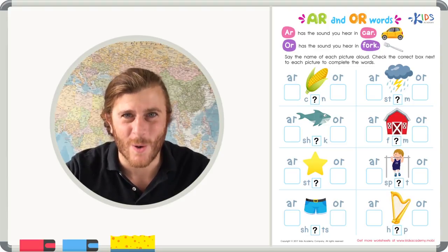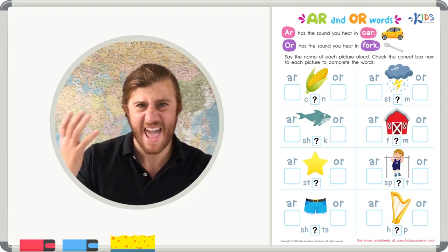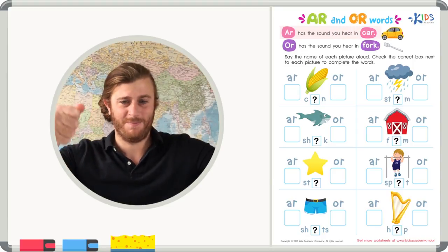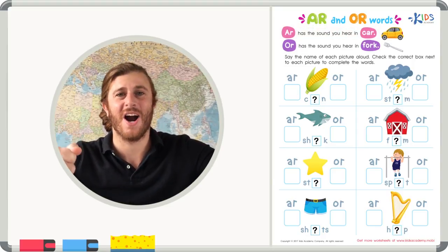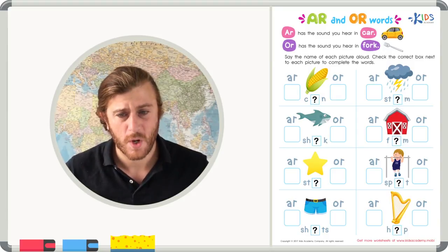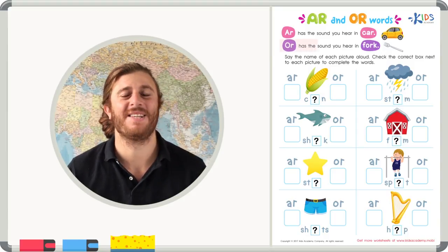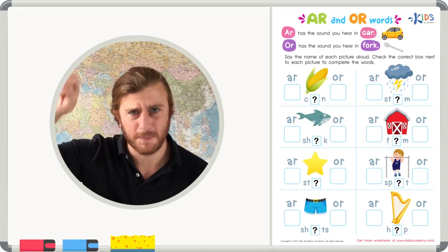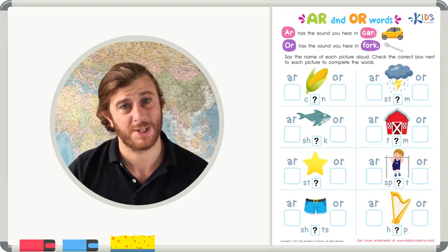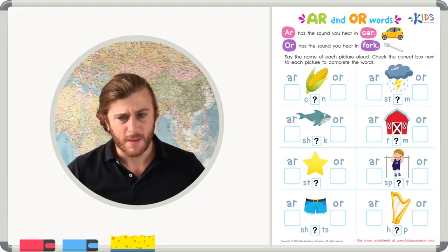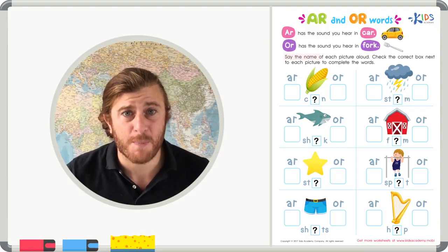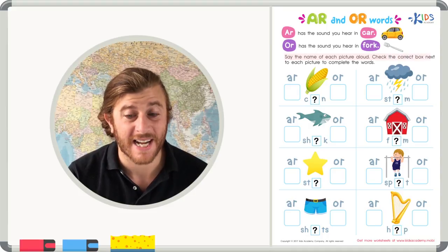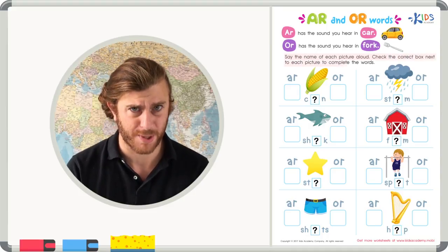A-R and O-R words. A-R has the sound you hear in car. Ca-a-a-r. O-R has the sound you hear in fork. Fork. That's some good imaginary food. Say the name of each picture aloud. Check the correct box next to each picture to complete the words.